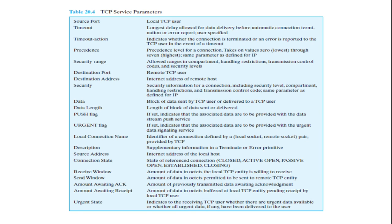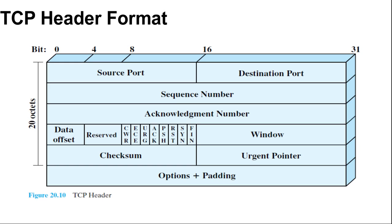Next we go to TCP header format, which is important for basic knowledge and also for exam purposes. TCP uses only a single type of protocol data unit called a TCP segment. The header is shown in the diagram. Because one header must serve to perform all protocol mechanisms, it is rather large with a minimum length of 20 octets. The fields are as follows.